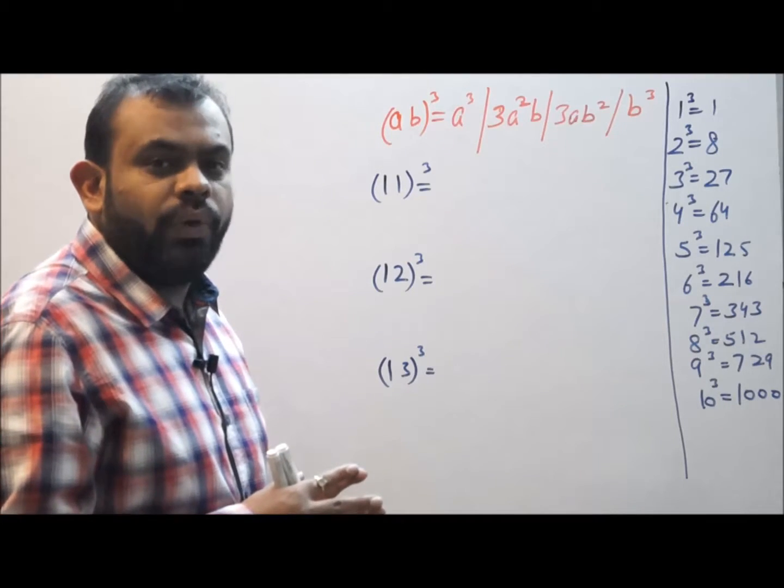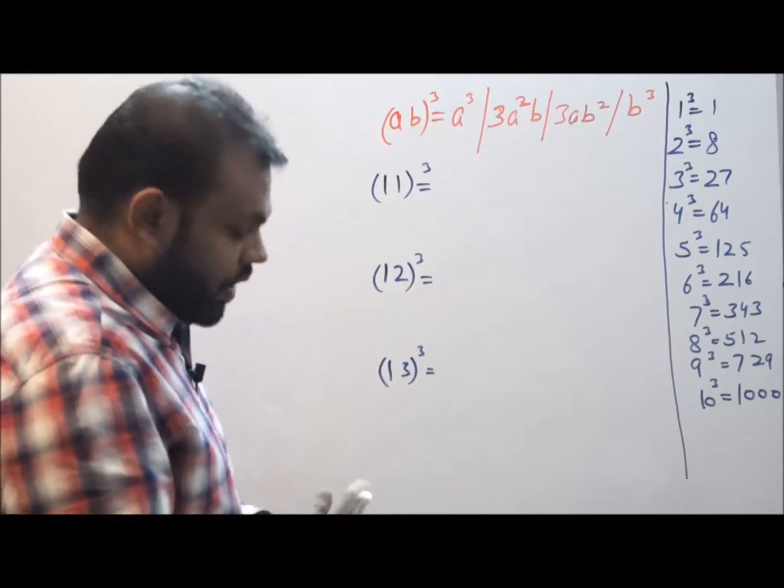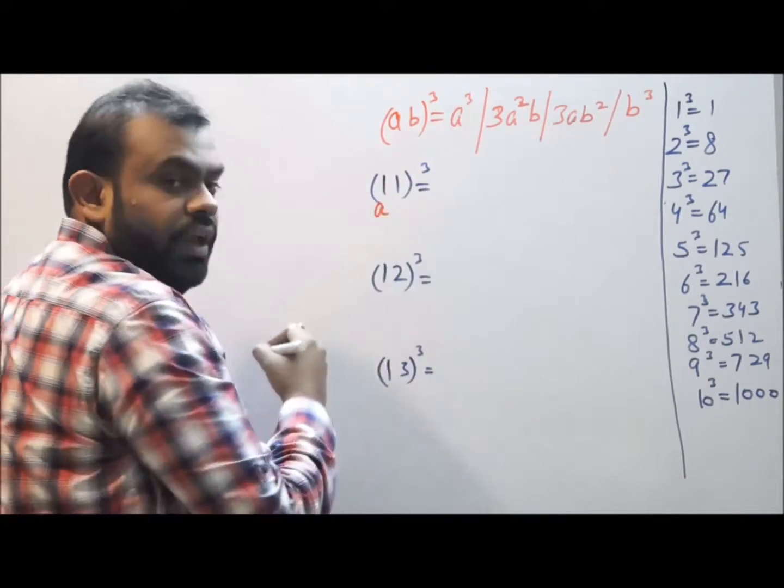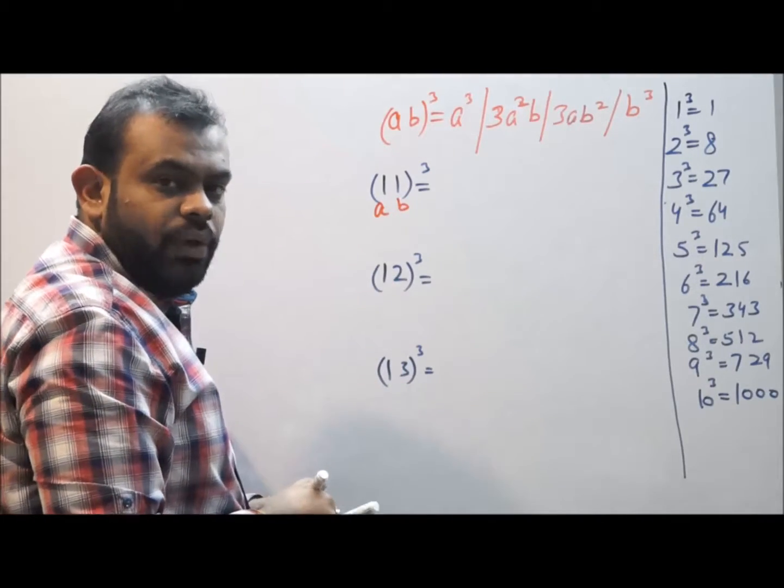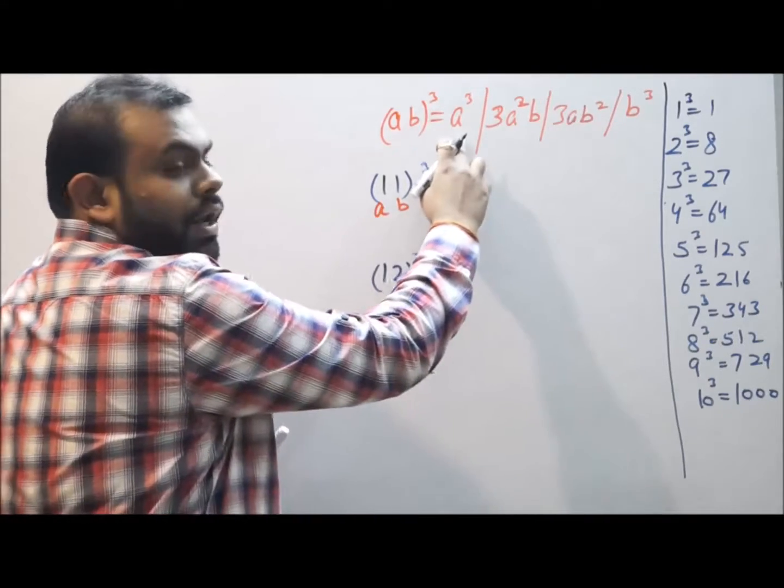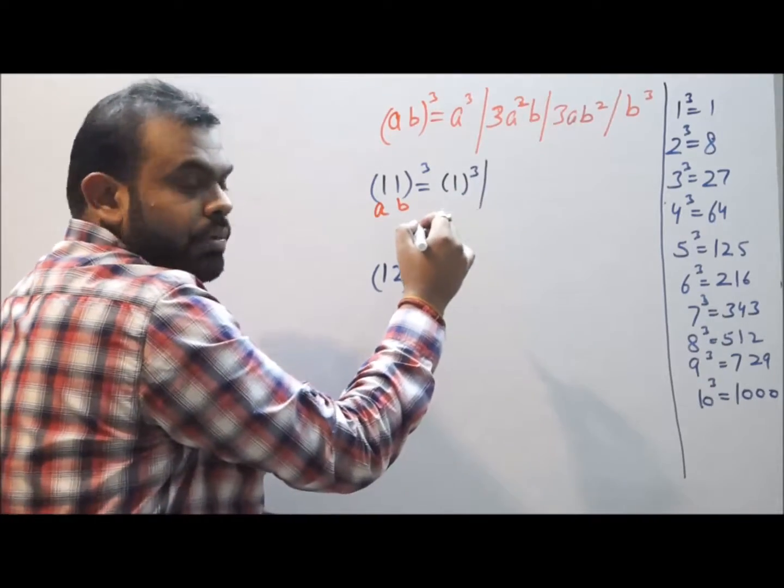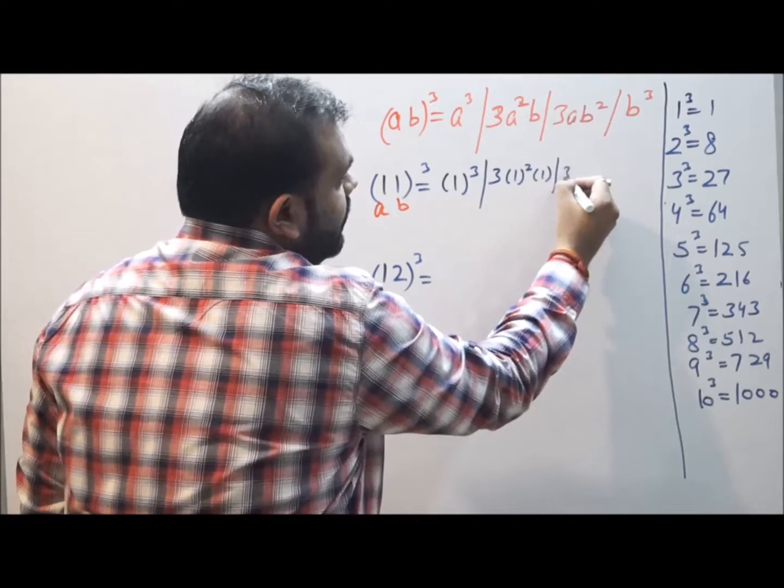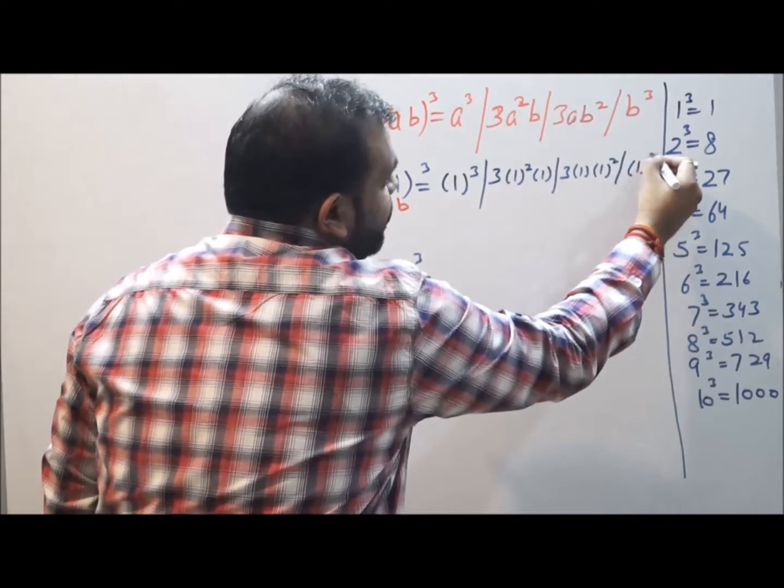Now let us take one example and try to solve the question and find the cube of 11. So if I compare 11 with a and b, at the place of a it is 1, at the place of b it is again 1. Putting a equal to 1 and b equal to 1 in the formula, let us find what we get.